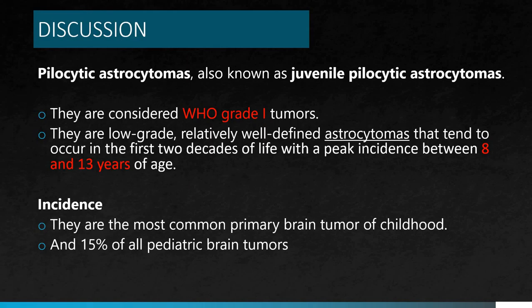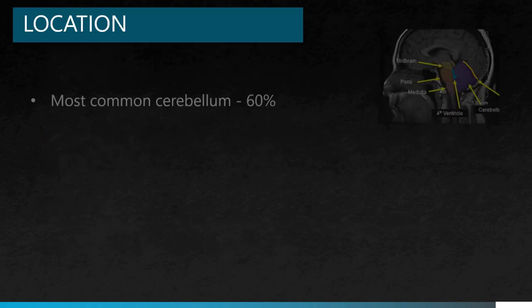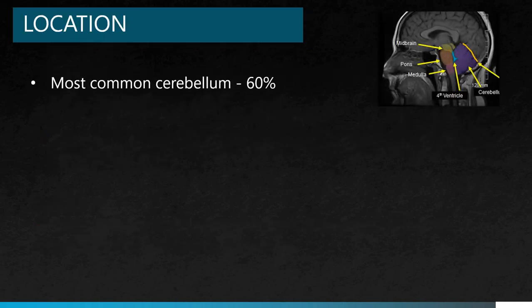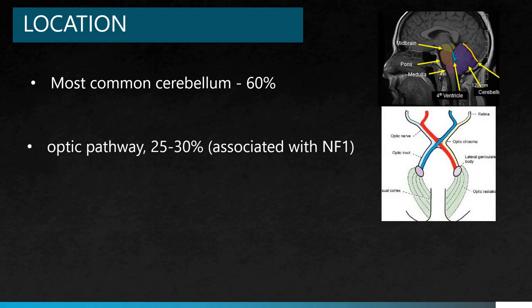Pilocytic astrocytomas, known as juvenile pilocytic astrocytomas, are considered WHO grade 1 tumors. They are low grade, relatively well-defined astrocytomas that tend to occur in the first two decades of life, with a peak incidence between 8 to 13 years of age. They are the most common primary tumors of the brain, comprising 15% of all pediatric brain tumors. The most common location is the cerebellum at 60%, and the second most common location is along the optic pathway.